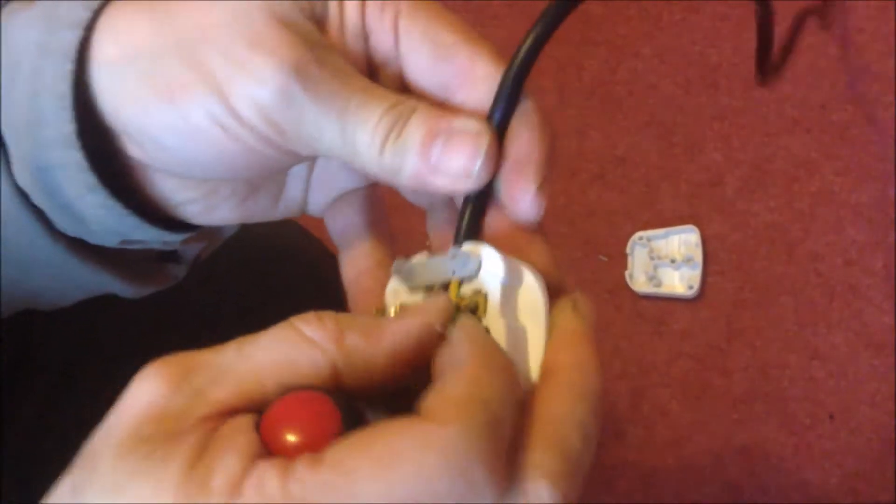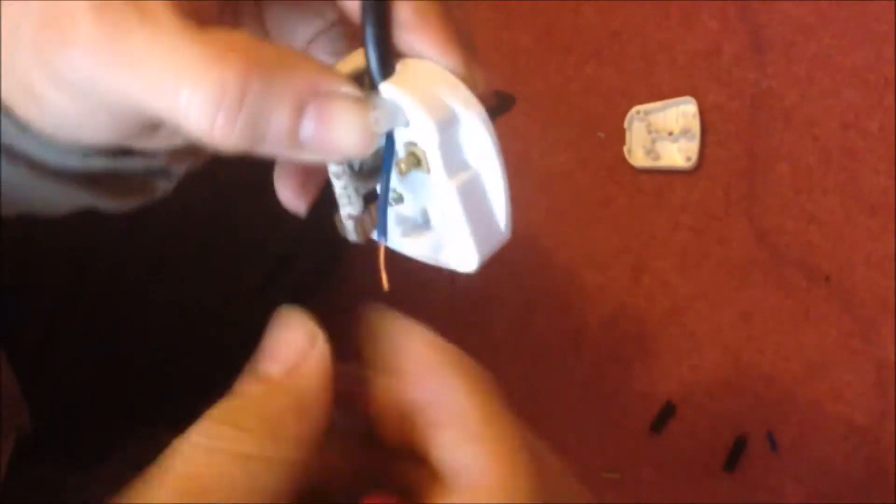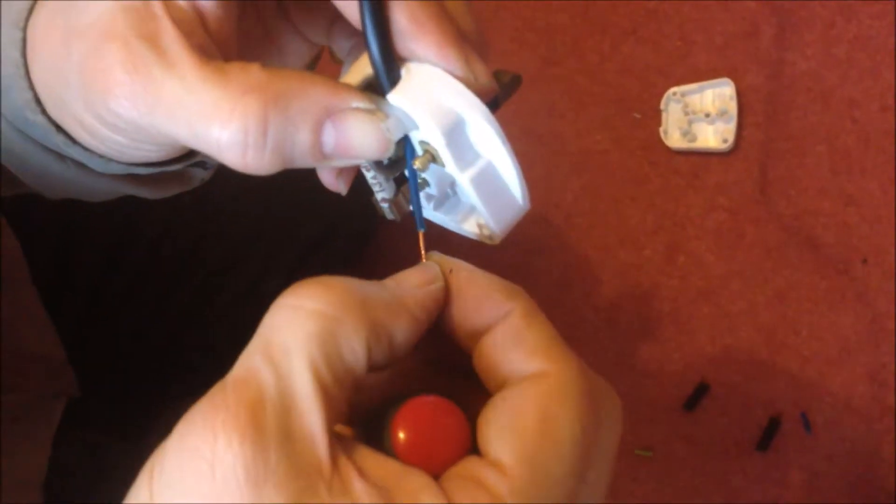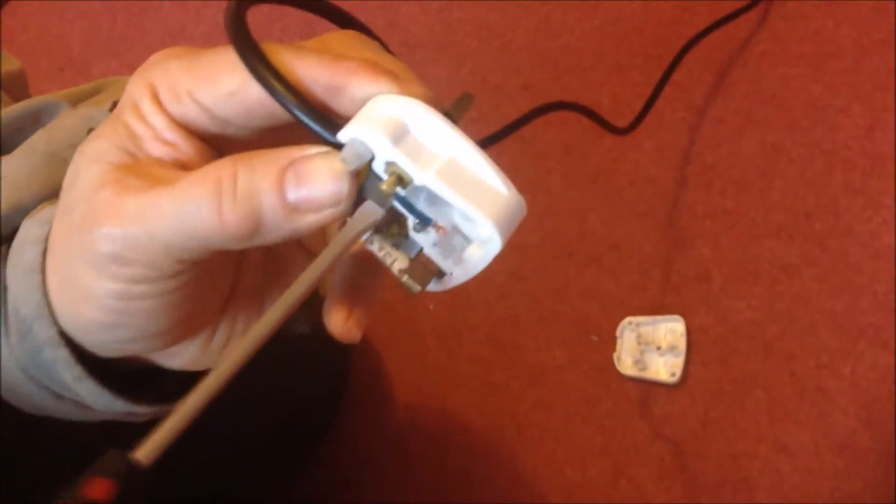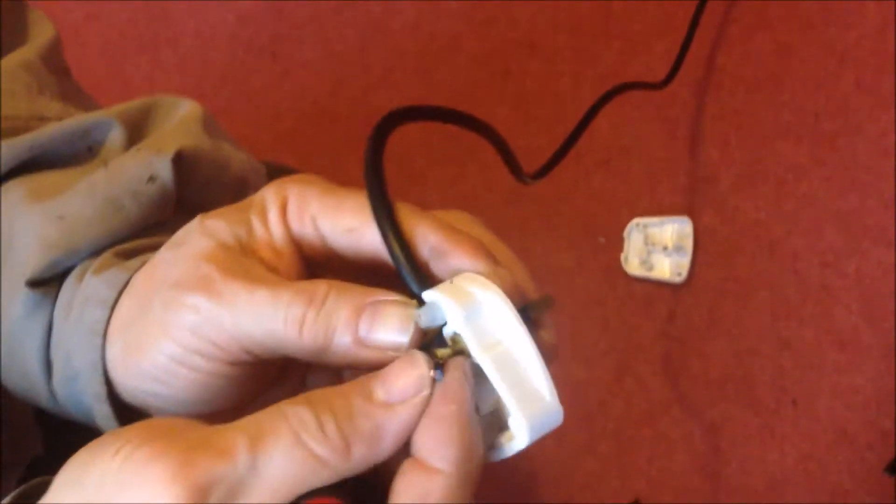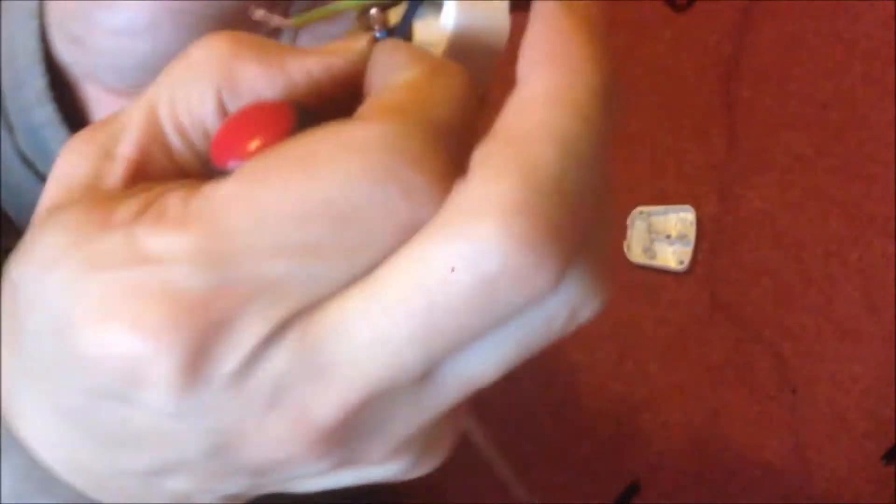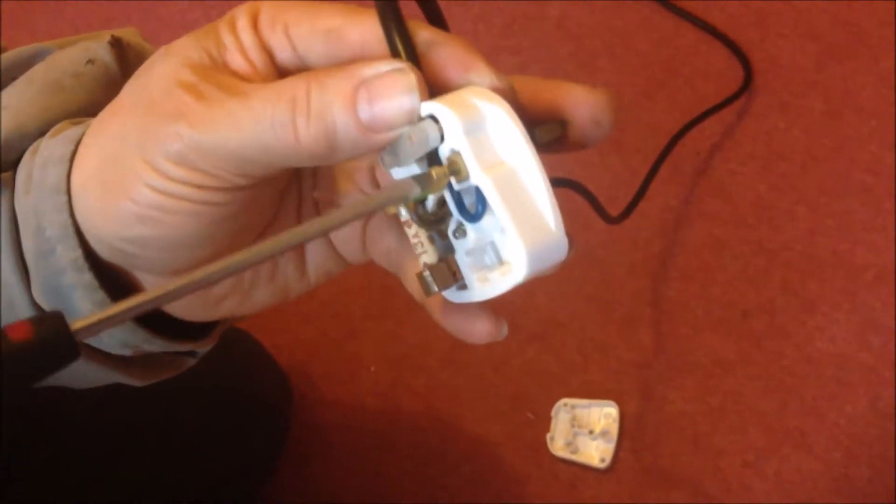We can do the other two. So now the neutral, neutral is blue. A little bit fold in to make contact better. Unscrew this, make more space for the wire. We get it in over there, fold it in, see that. At that position, we can tighten this.